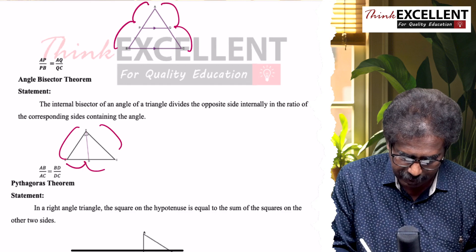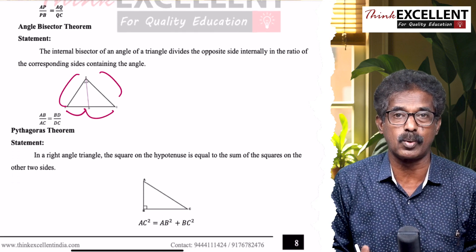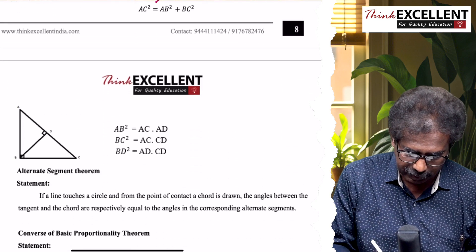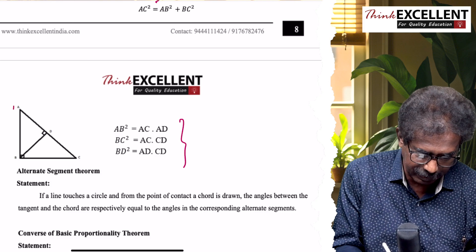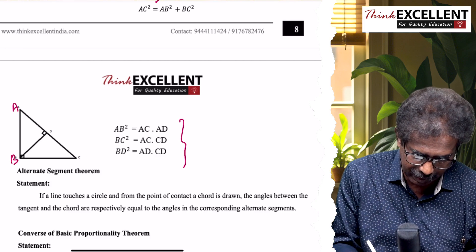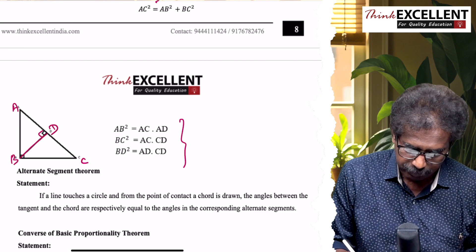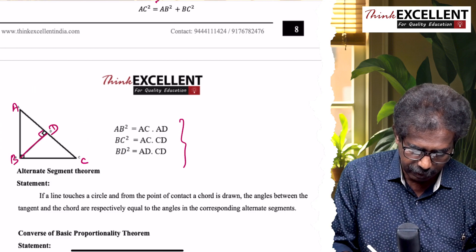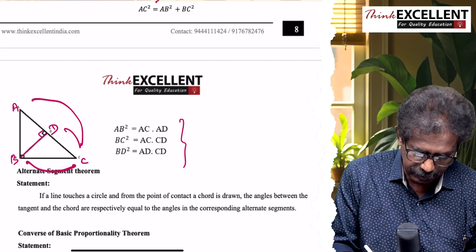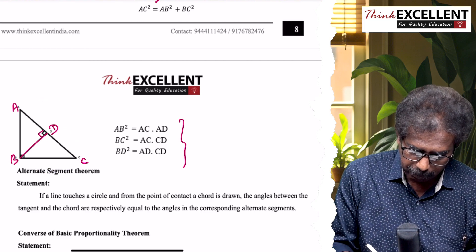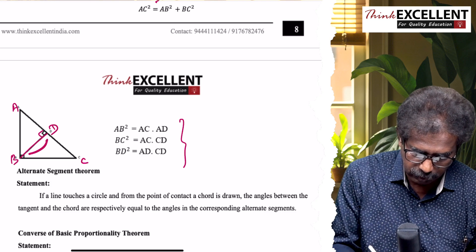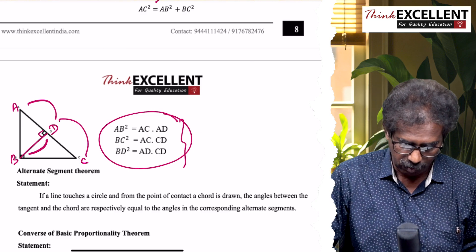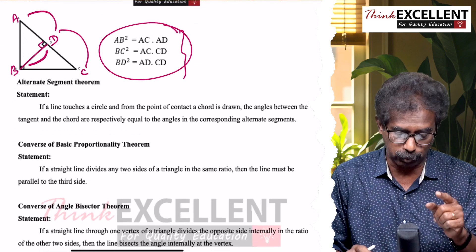Angle bisector theorem: AB/AC = BD/DC. Then Pythagoras theorem - right angle triangle, square of the hypotenuse equal to sum of the squares of other two sides. Then here, these results are very important. ABC is a right angle triangle. B, we draw a perpendicular D. Then AB² = AC × AD. Then BC² = AC × CD. Then one more: BD² = AD × DC.